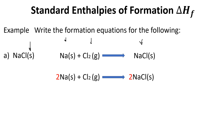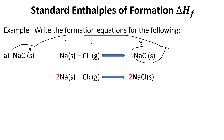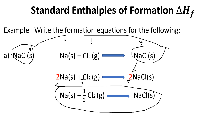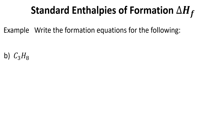The third rule says we need one mole of the substance we're forming. We currently have a coefficient of two in front of sodium chloride, so we divide all coefficients by two. That gives us the final balanced equation with one mole of NaCl, which would have its own ΔH value.